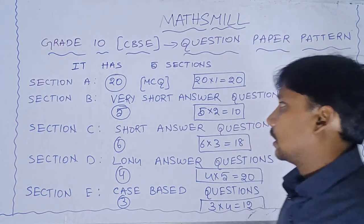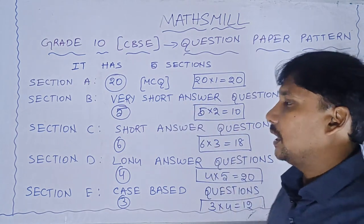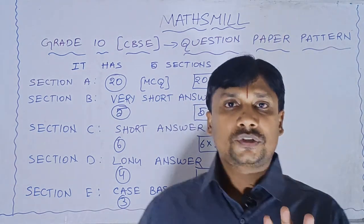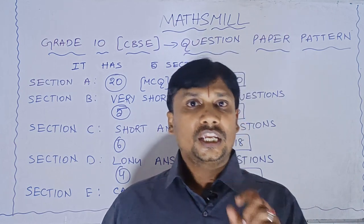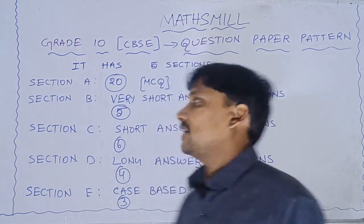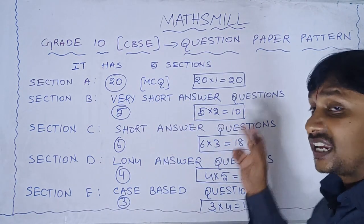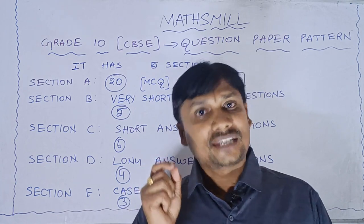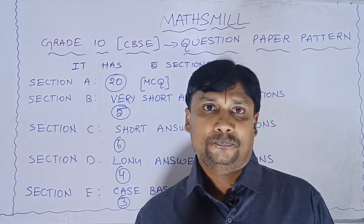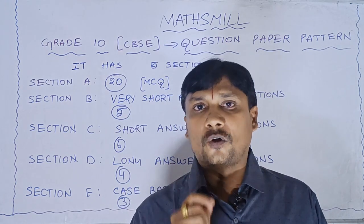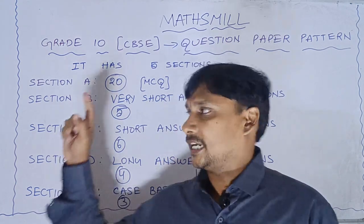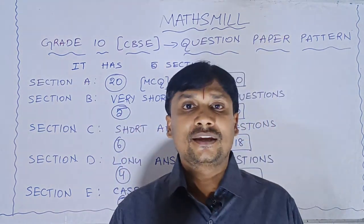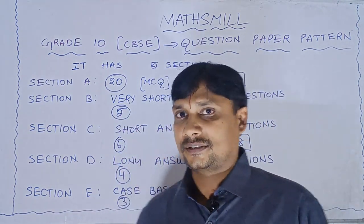Coming to Section B, it has 5 questions. Each question carries 2 marks. So Section B consists of 10 marks total. Section A is 20 marks, Section B is 10 marks.